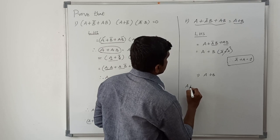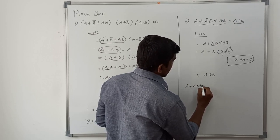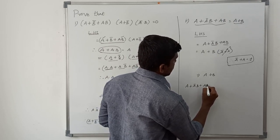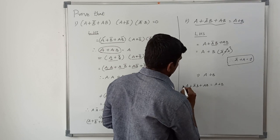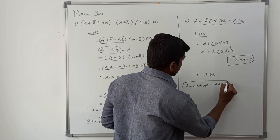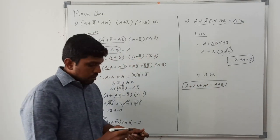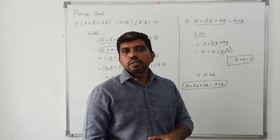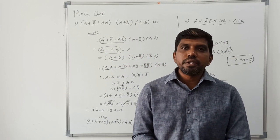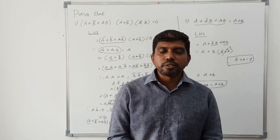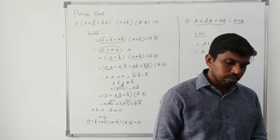So left hand side a + āb + ab equals a + b, which equals the right hand side. I hope you understand the concept well. If you are watching my video for the first time, kindly subscribe and support us to make more videos. Thanks for watching. Thank you.